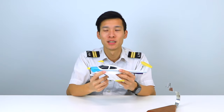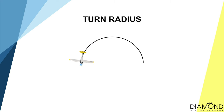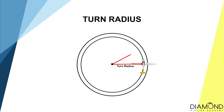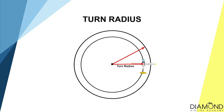The next term to define is the turn radius. When the aircraft is turning, imagine it is drawing a circle in the sky. Turn radius describes the distance between the aircraft and the centre of that circle. If the distance increases, the turn radius increases; if the distance decreases, the turn radius decreases.